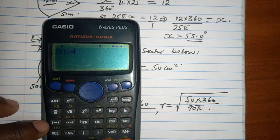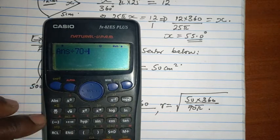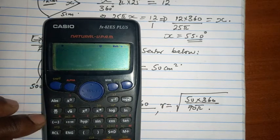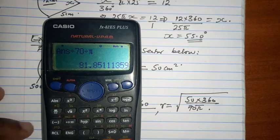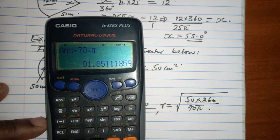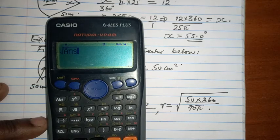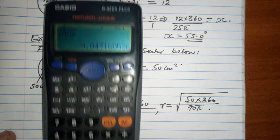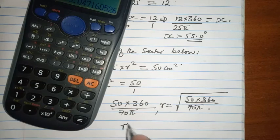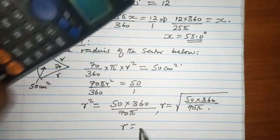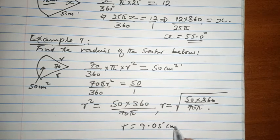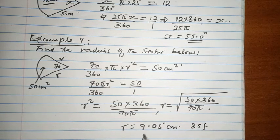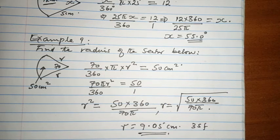18,000 divided by 70, then divided by pi, you get 81.85. Find the square root of 81.85, and the answer is 9.05. The radius is 9.05 centimeters to three significant figures. And that is where we are.